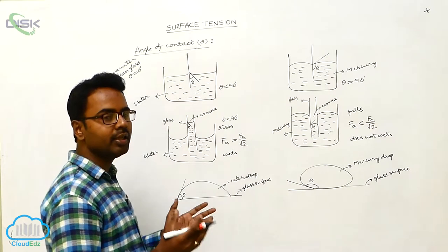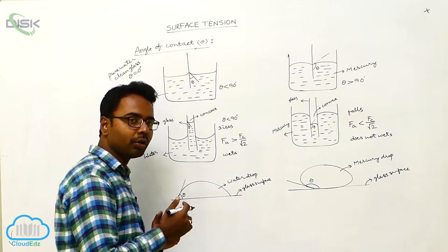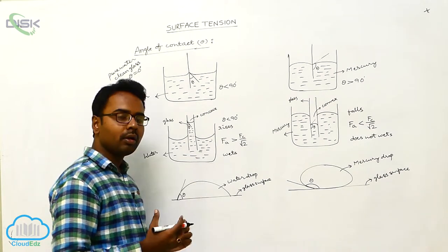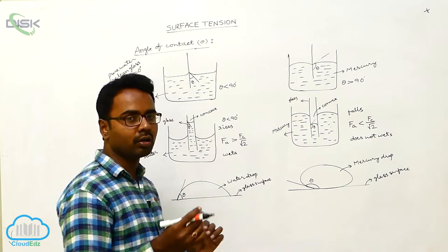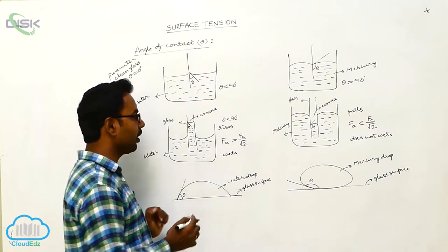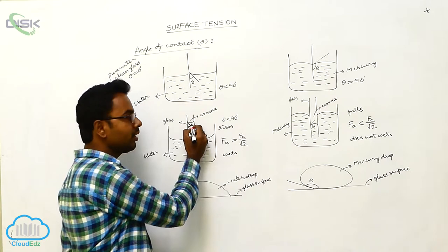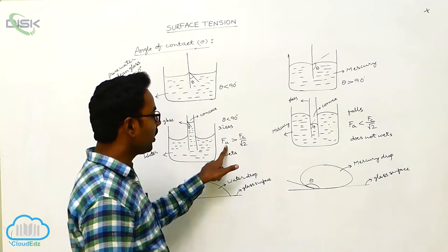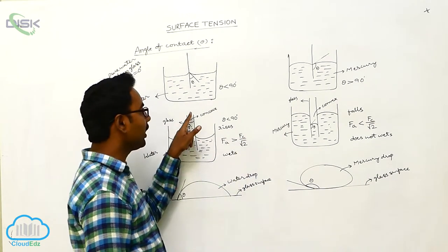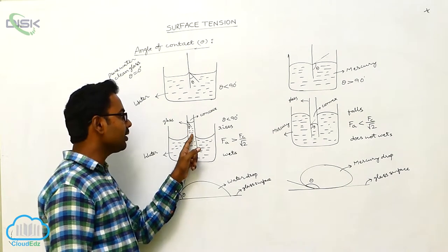Cohesive forces are the forces of attraction among the same kind of molecules — between two water molecules, two glass molecules, two kerosene molecules, or two mercury molecules. Adhesive forces are the forces of attraction between different kinds of molecules, such as glass and water molecules, or mercury and glass molecules. For liquid rising in a capillary tube, the relation is: Fa is greater than Fc divided by root 2.